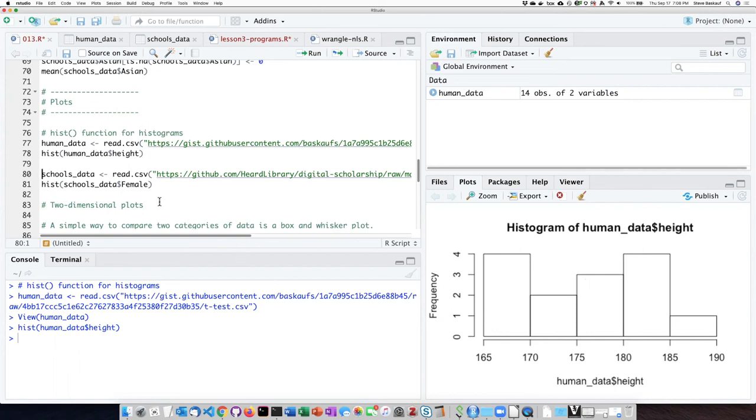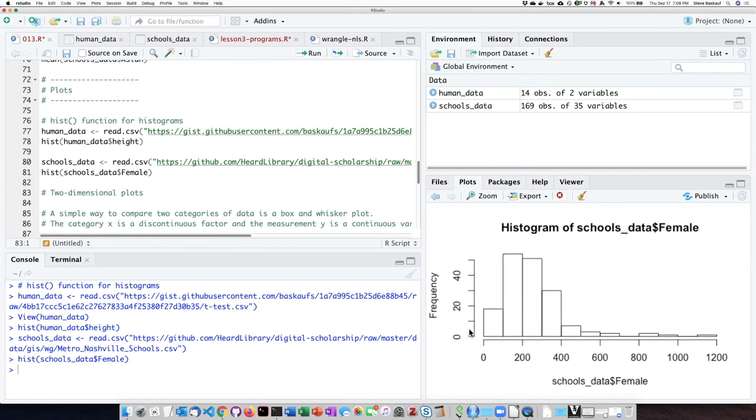If we look at a larger data set, for example, if we read in the schools data set again and make a histogram of it, we can see that we have a much smoother curve because there are many more schools included in the data set.